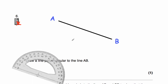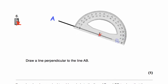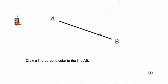Question number six: we've been given the line AB and asked to draw a line perpendicular to it. Choose a point on the line, get your protractor, put the cross at the centre of the protractor on that point. Zero is on the outside — go around to 90 degrees, 10, 20, 30, 40, all the way to 90. Draw a line through those two points — the cross and the 90-degree point. Then mark in the right angle. This line is perpendicular to line AB.